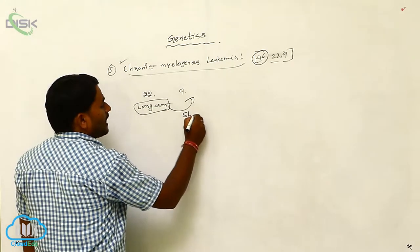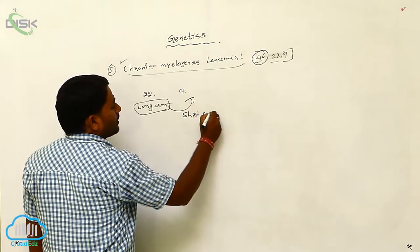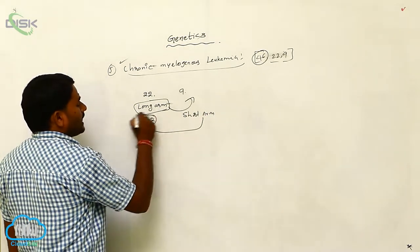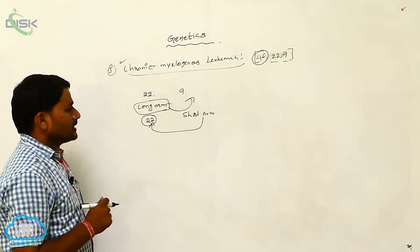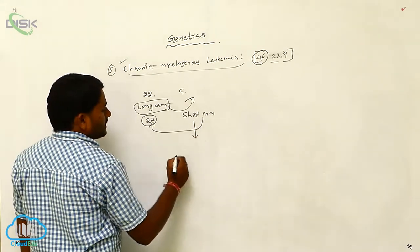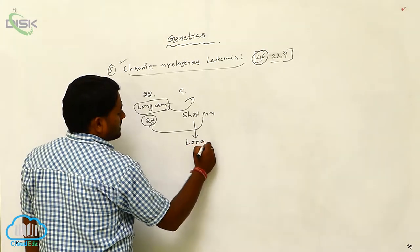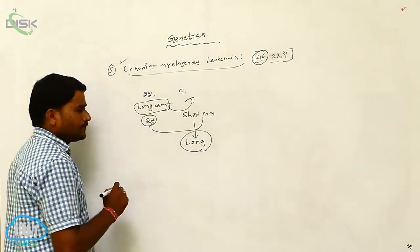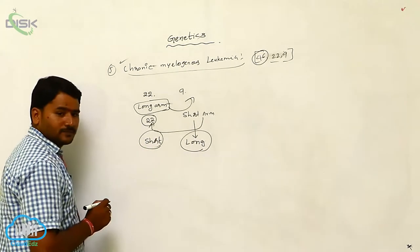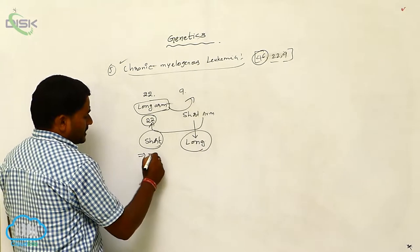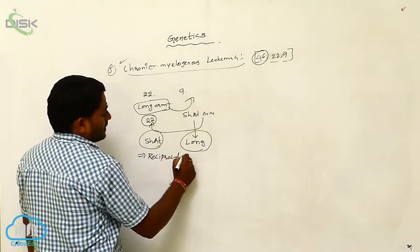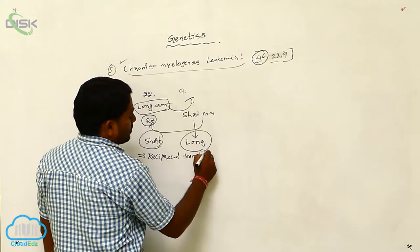The short arm will be attached to the 22nd. Then the 9th chromosome becomes a long chromosome and the 22nd will become a short chromosome. This is called reciprocal translocation.